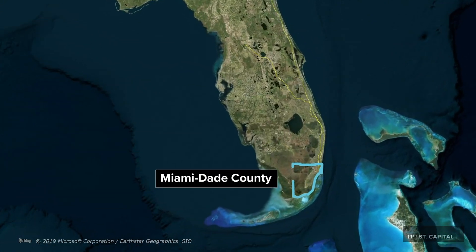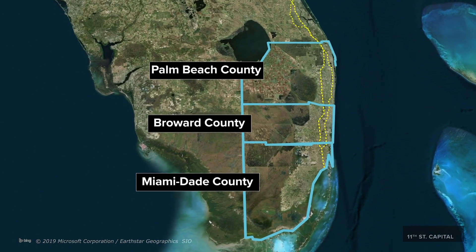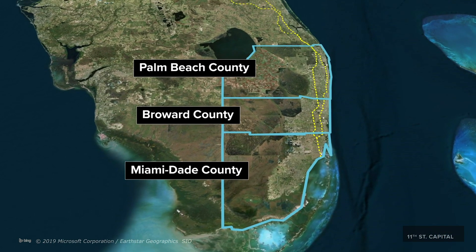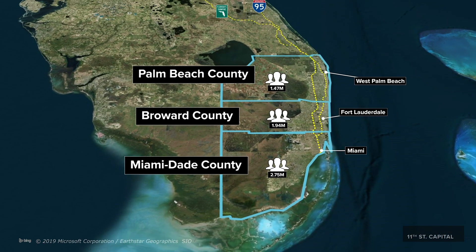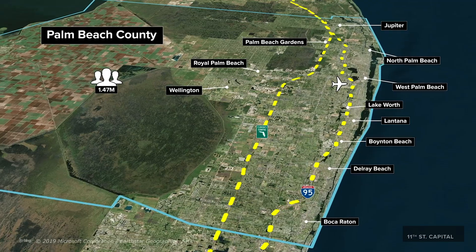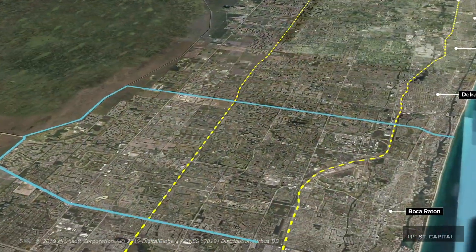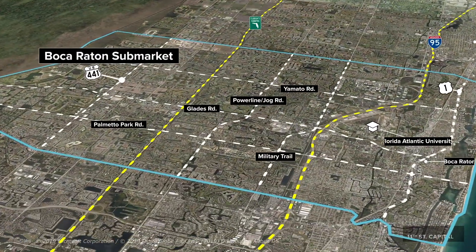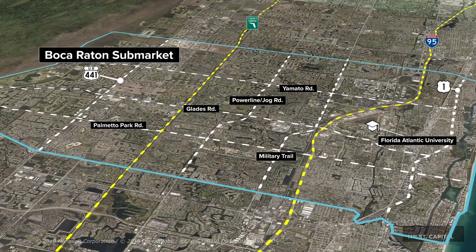I was working on a big map project last month and part of that project was animating roads in the state of Florida in the United States. At the beginning of the project I was trying to figure out how I could map them easily. After searching around a bit, I realized that Wikipedia has a lot of KML files for each of these major roads.